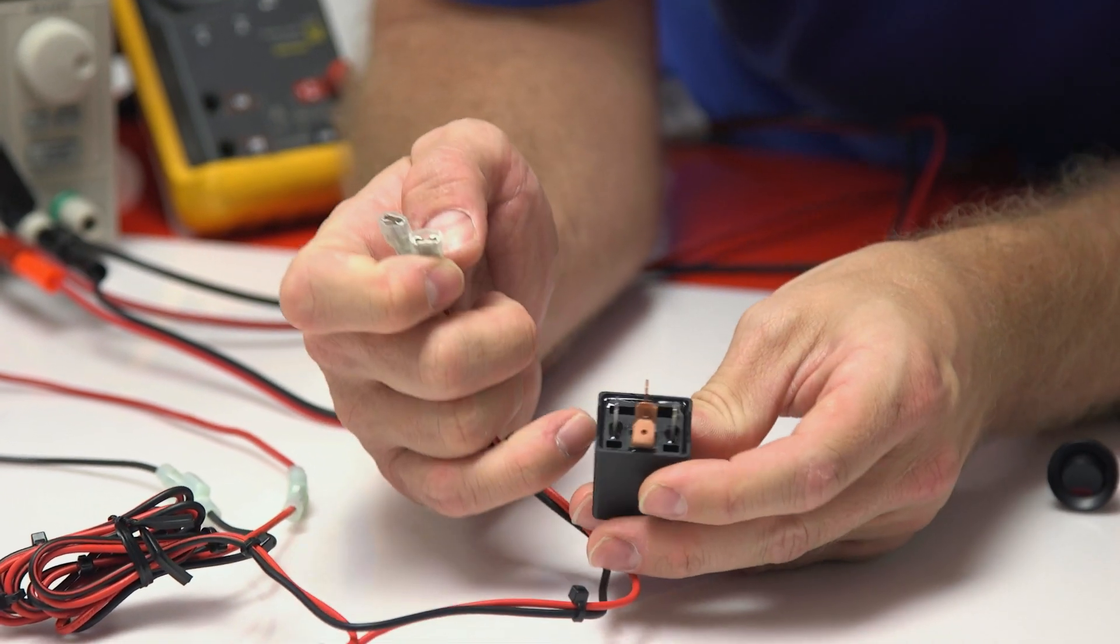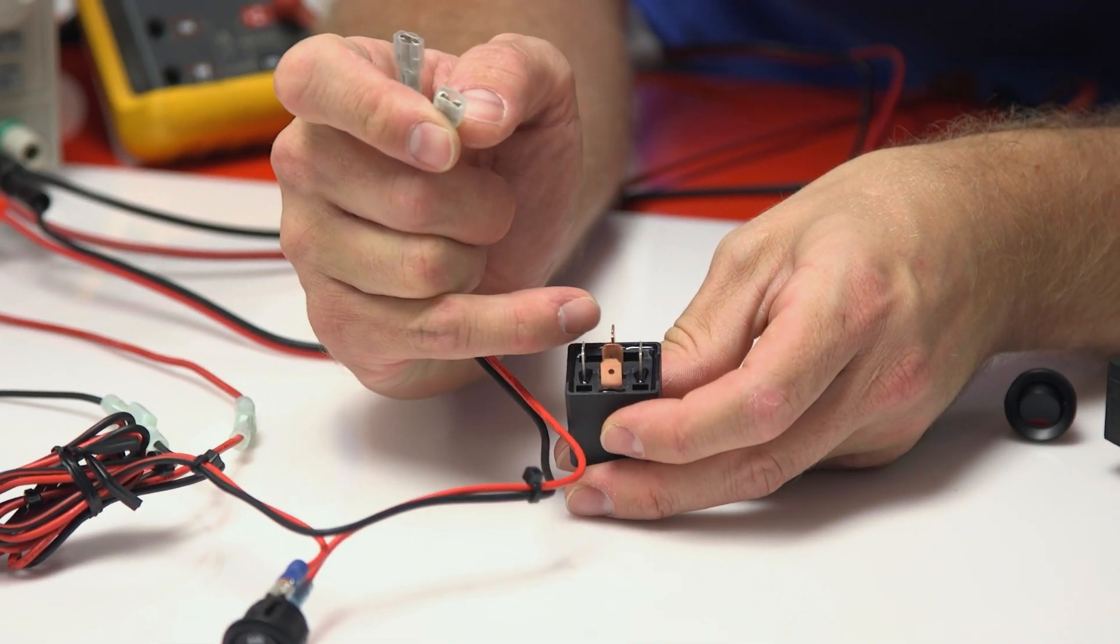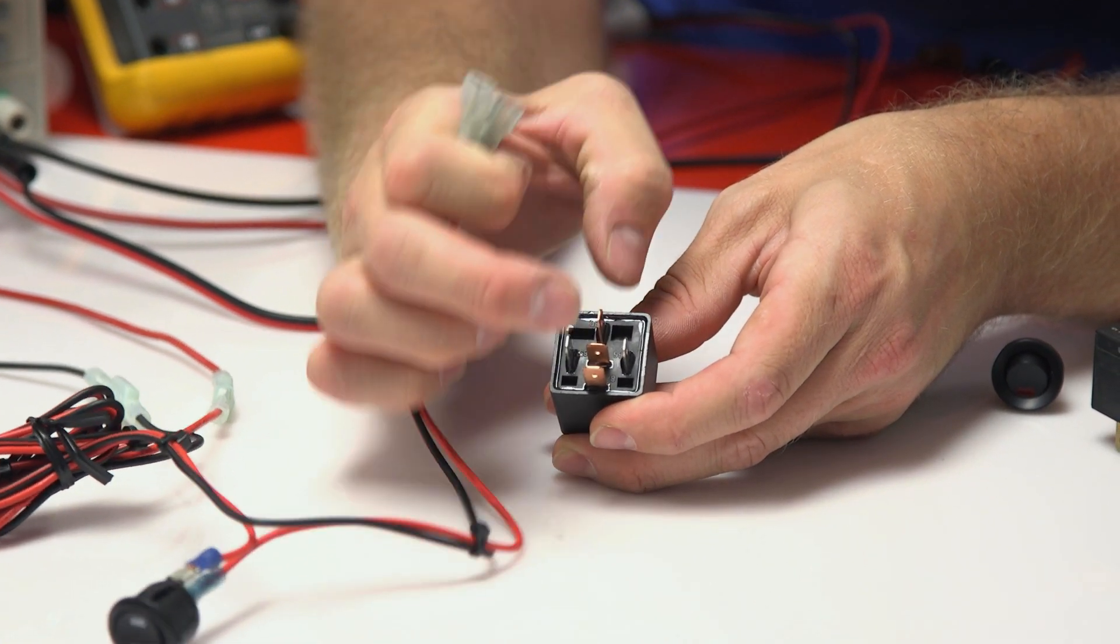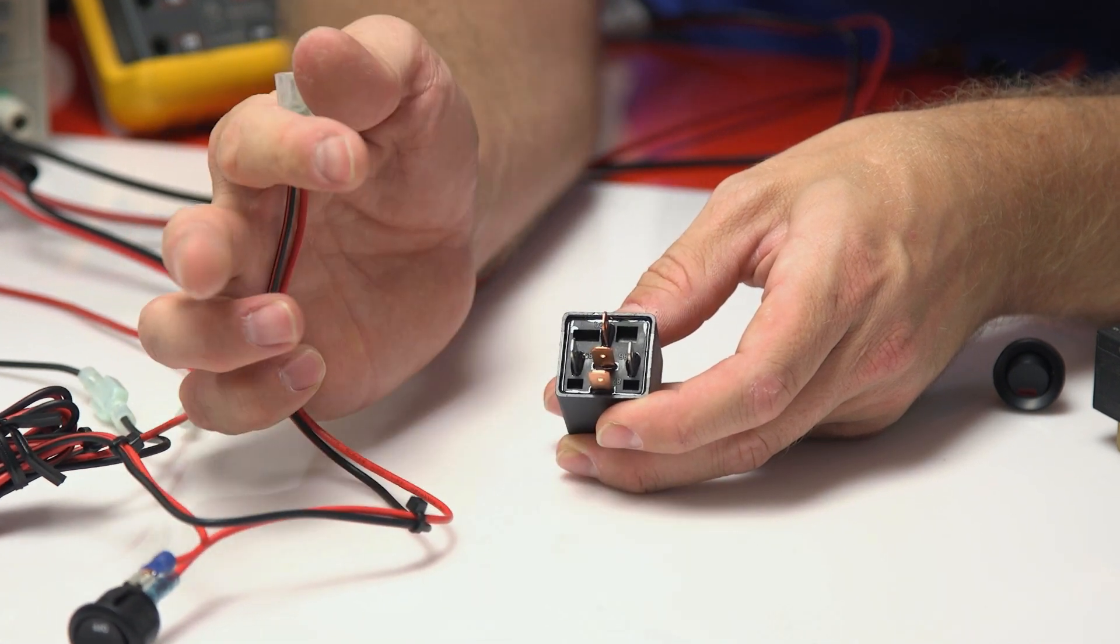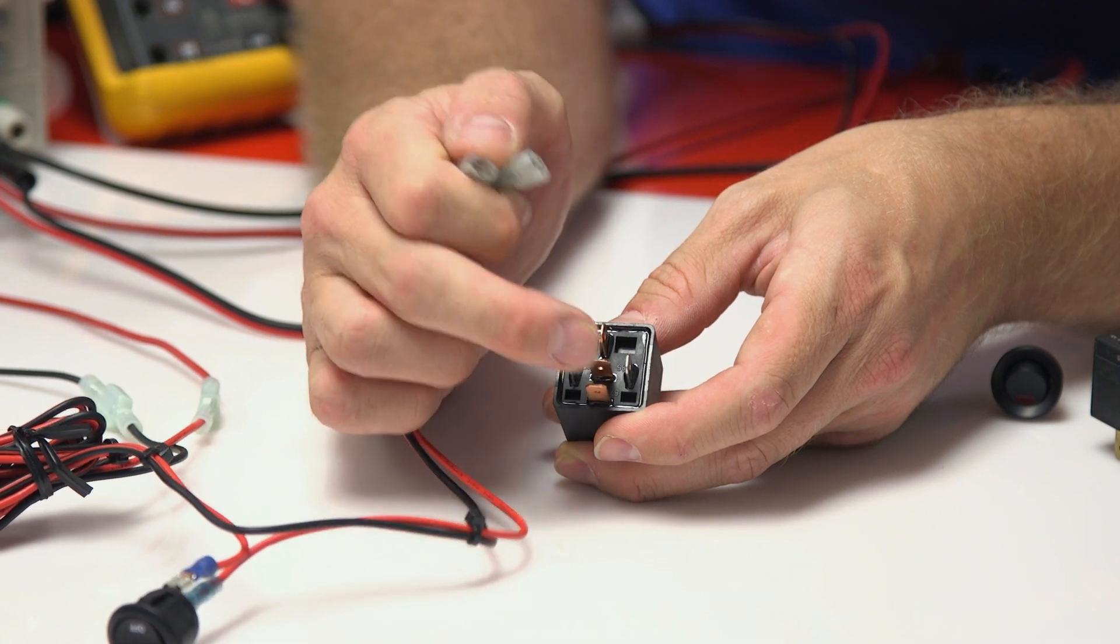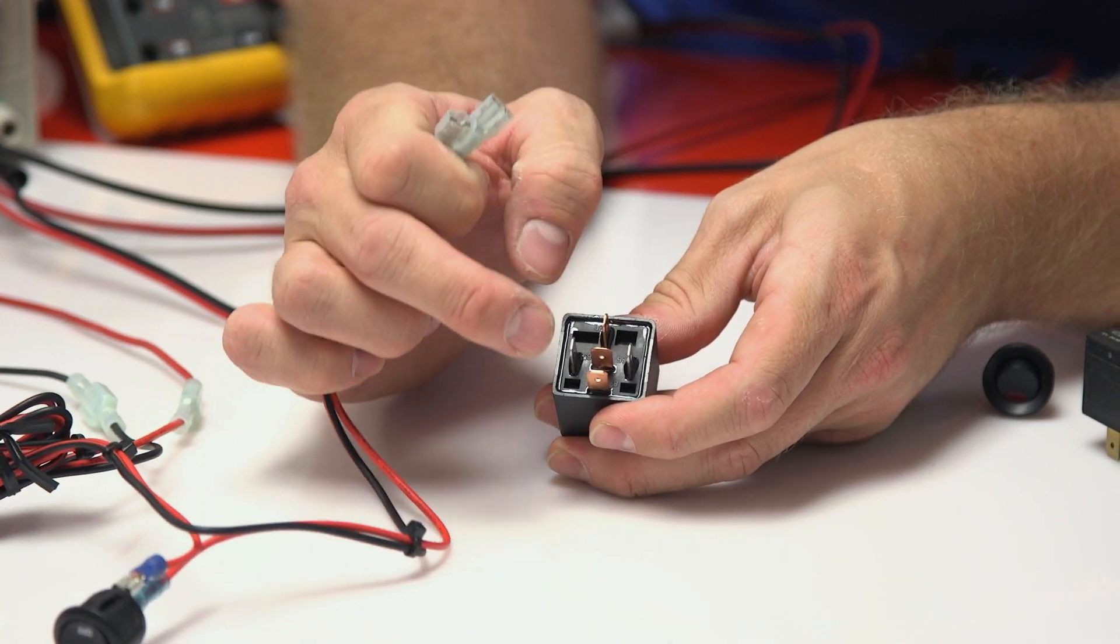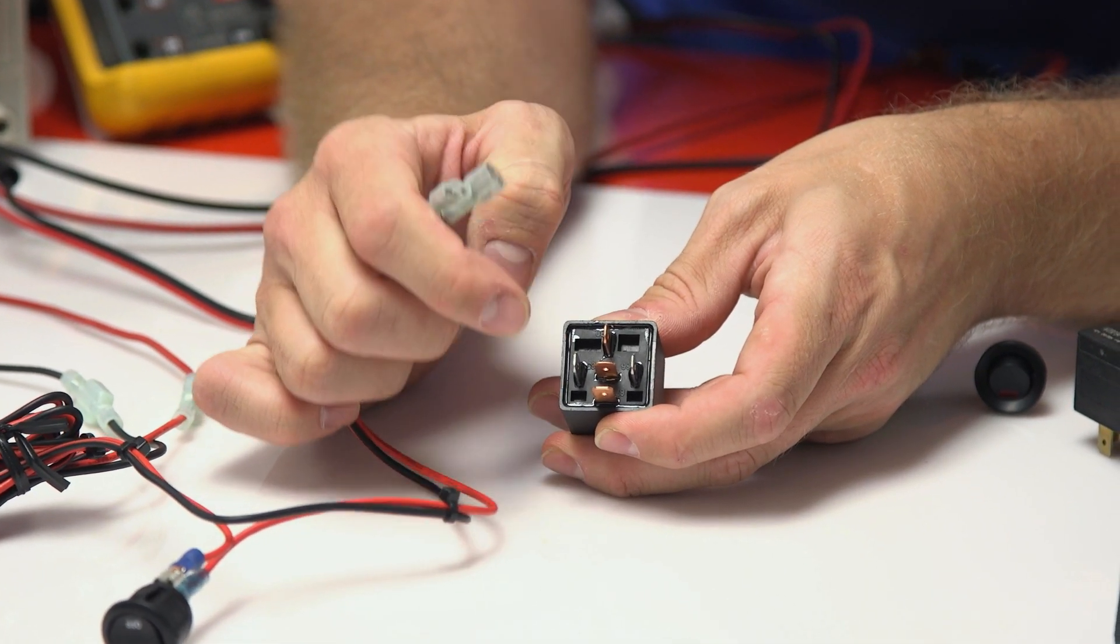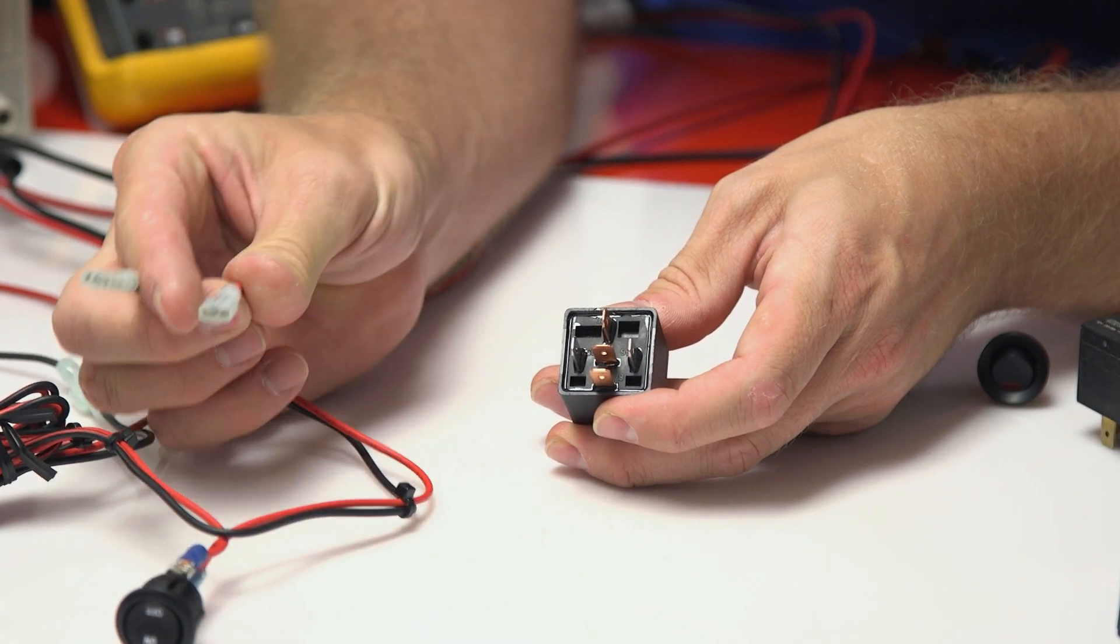On the relay there's a series of contacts. These are numbered 87, 87A, and 30 are the current switching or what you're actually going to be switching, be it ground, be it positive, whatever it may be. This relay happens to be a single pole dual throw, so there's a normally open contact and a normally closed contact. The two outside contacts are your coil wires and you need to provide 12 volts to one side and ground to the other.